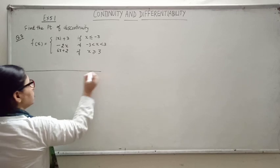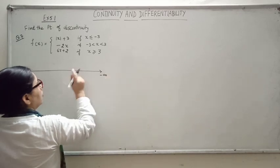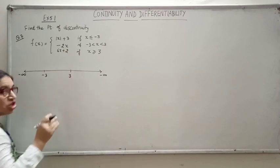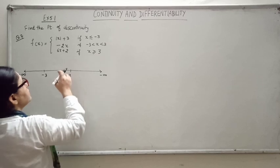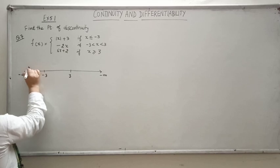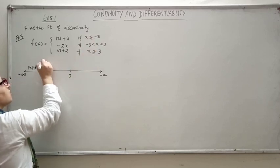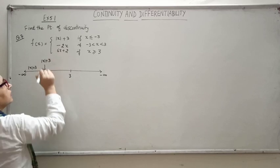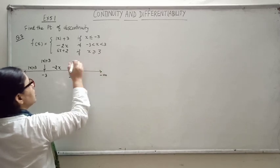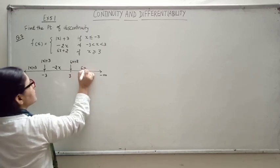If I visualize this function on the number line, the critical points are where this function is changing its behavior. When x is less than minus 3, it is mod x plus 3. When x equals minus 3, the function is the same. In between minus 3 and 3 it is minus 2x. At x equal to 3 and for greater than 3, it is 6x plus 2.